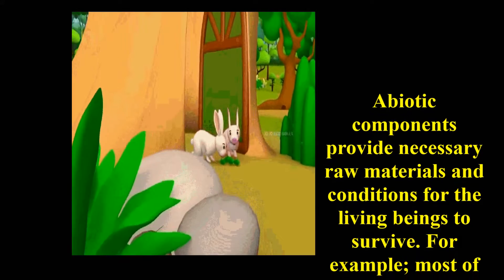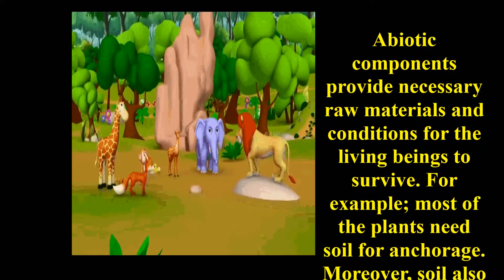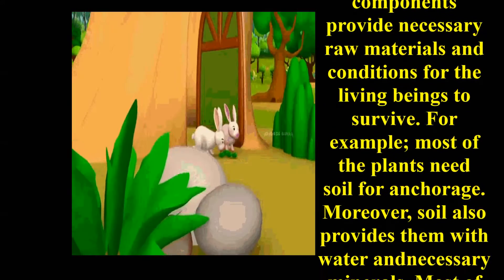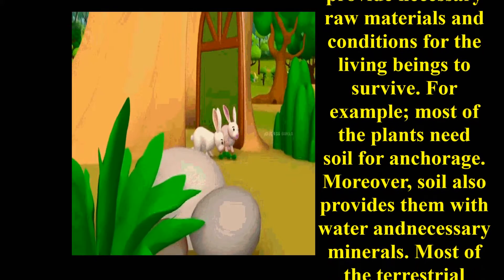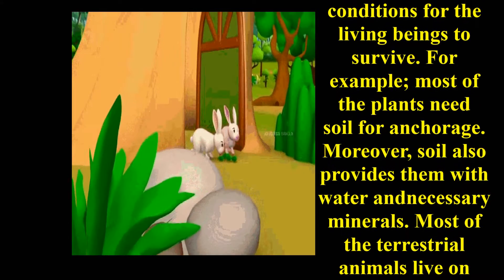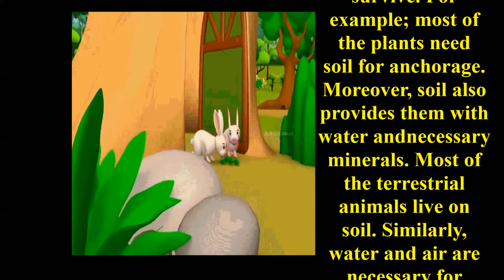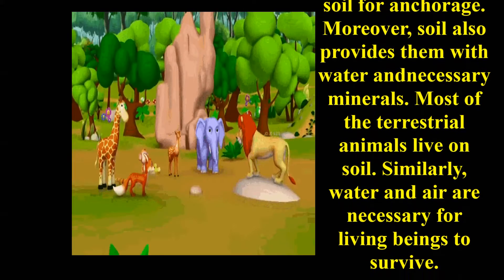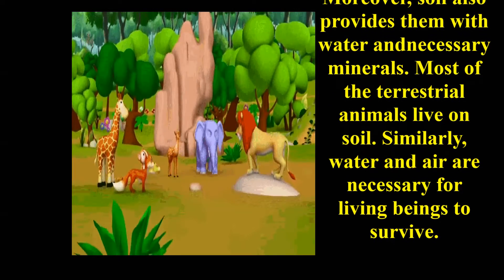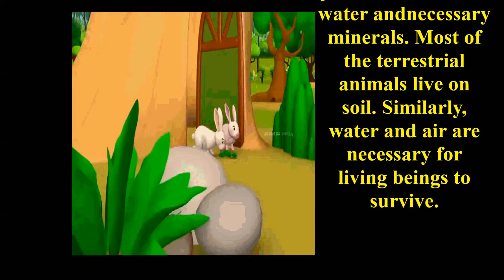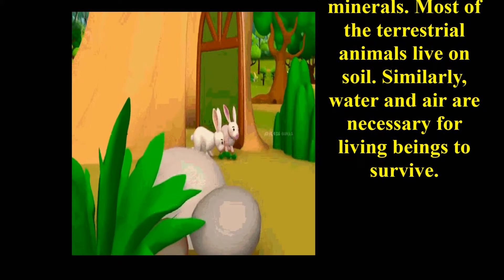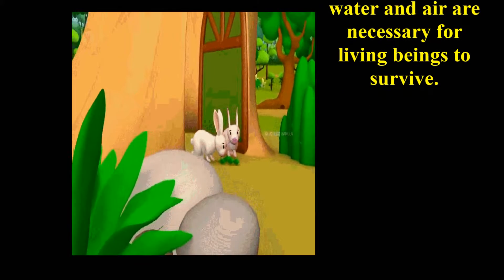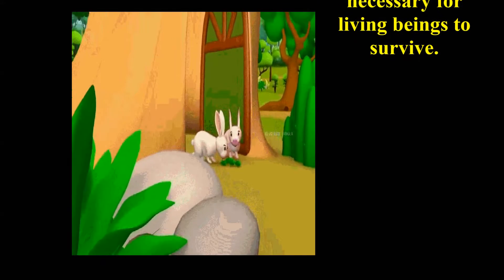Abiotic components provide necessary raw materials and conditions for living beings to survive. For example, most plants need soil for anchorage, and soil also provides them with water and necessary minerals. Most terrestrial animals live on soil. Similarly, water and air are necessary for living beings to survive.